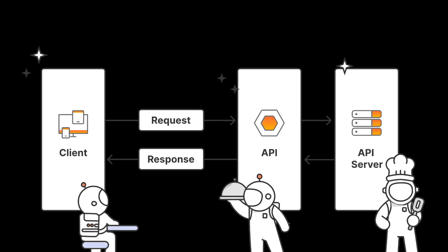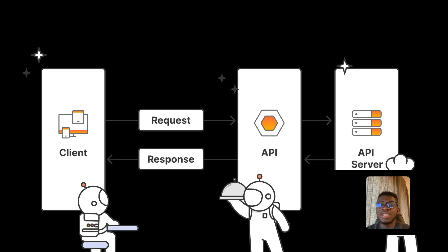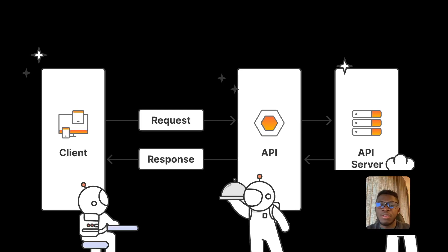To sum it all up, APIs are like secret messengers that allow different applications to talk to each other, keeping our digital world connected — just like a friendly waiter who takes your pizza order exactly as you want. Thanks for watching! If you enjoyed this deep dive into APIs, don't forget to give this video a thumbs up and subscribe for more tech insights. See you in the next one!